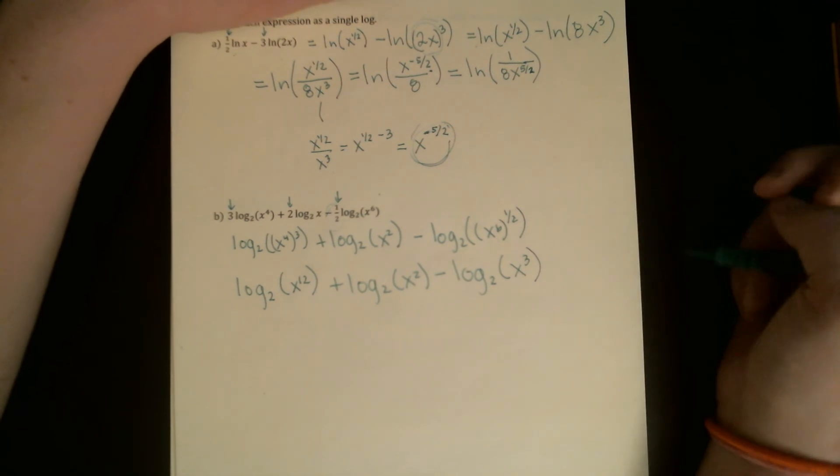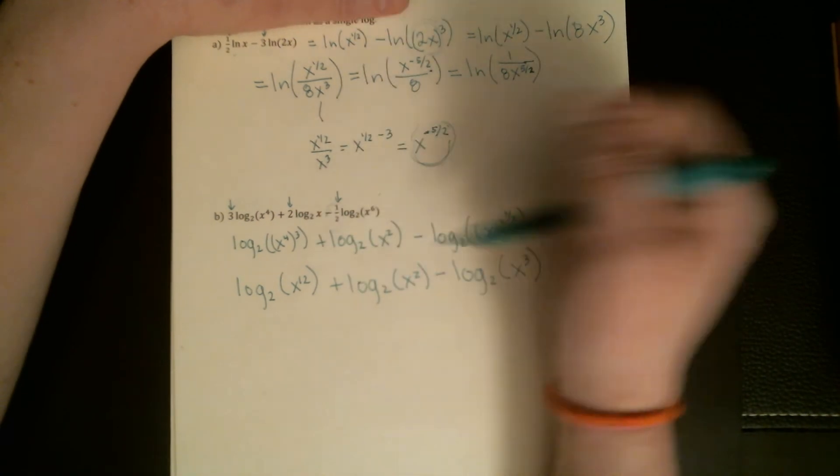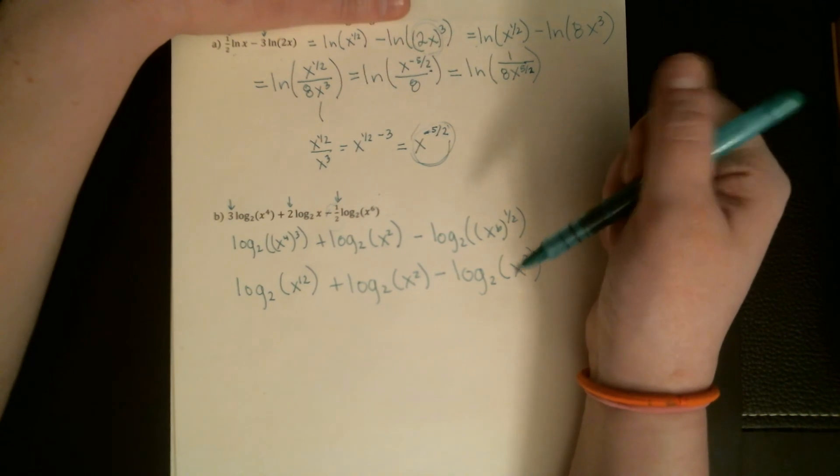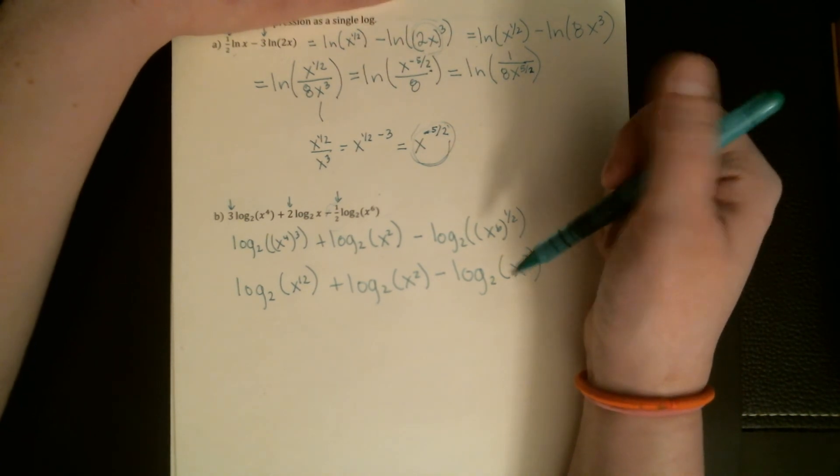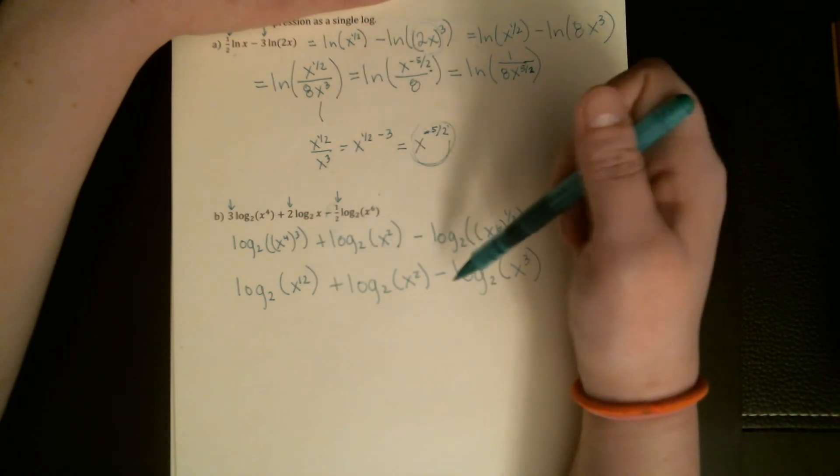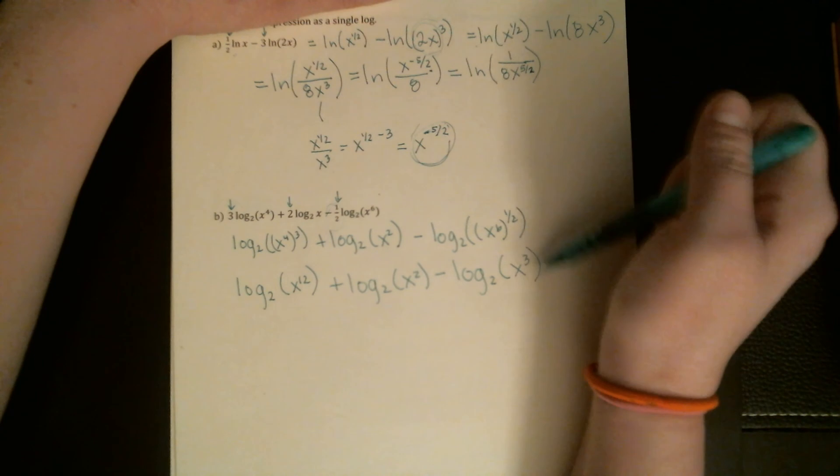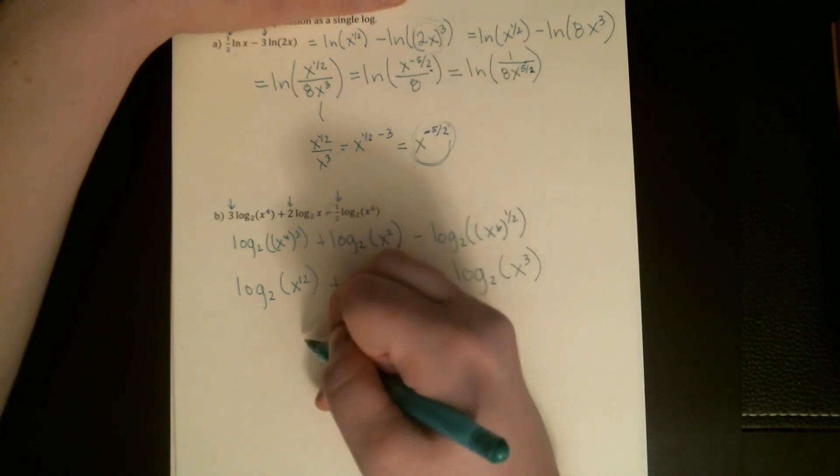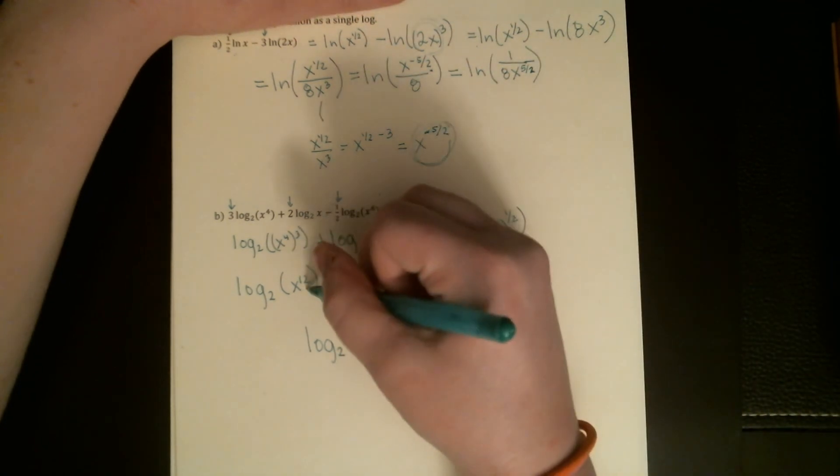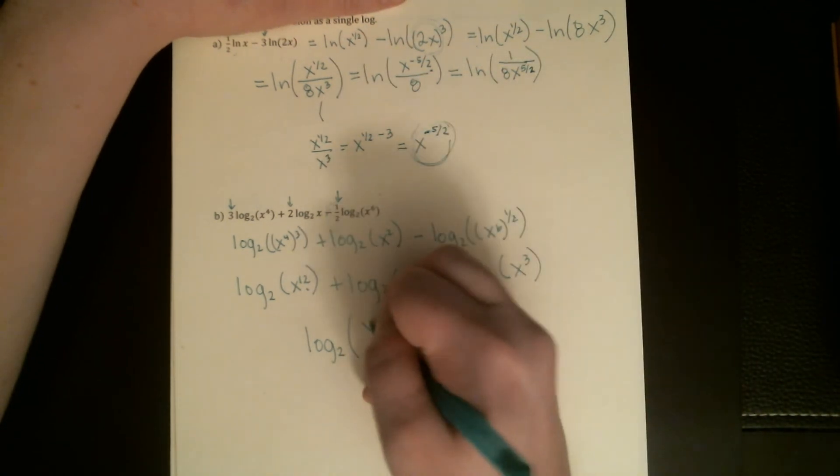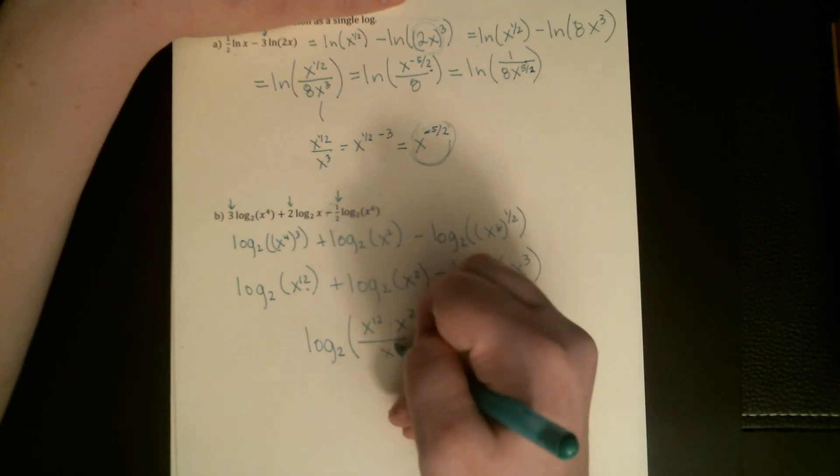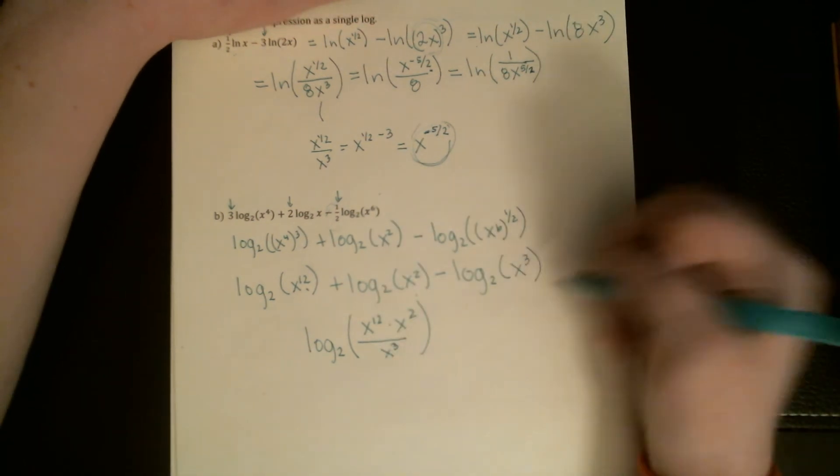To combine the sum and difference of logs, you can do that in separate steps, but I actually think sometimes that gets people in more trouble. If you're thinking about those properties, what they say is if you add two logs you should get a product. If you're ever subtracting a log, that should push that thing inside the log into the bottom. So we should just be able to jump to saying I'm going to have an x to the 12th multiplied by an x squared, and then in the bottom of that fraction I need to put an x cubed.